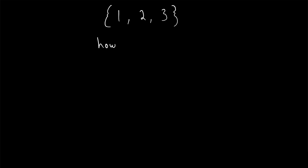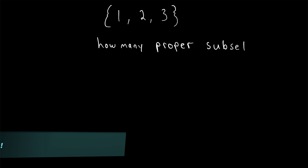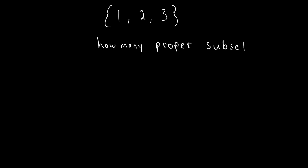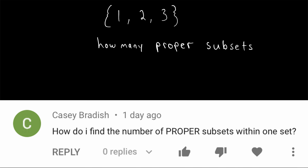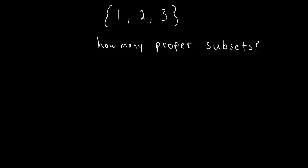How many proper subsets does any given set have? If a set is infinite, then it has infinitely many subsets and infinitely many proper subsets, so we're talking about finite sets. This is a viewer requested video — be sure to leave yours down in the comments. So how many proper subsets does a finite set have?